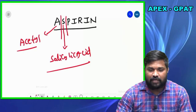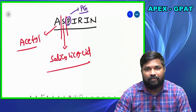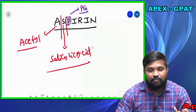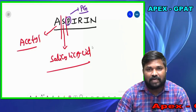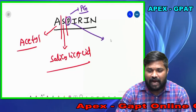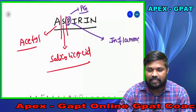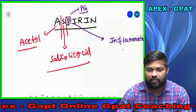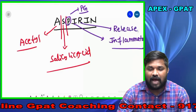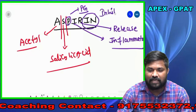The next part of the mnemonic: P indicates Prostaglandins. Prostaglandins are an inflammatory mediator — inflammatory mediators. The next letter I indicates inflammatory, R indicates release, and the last IN stands for inhibition.